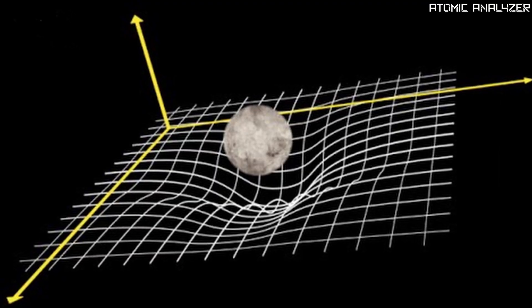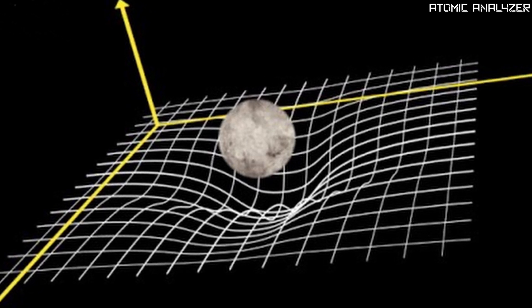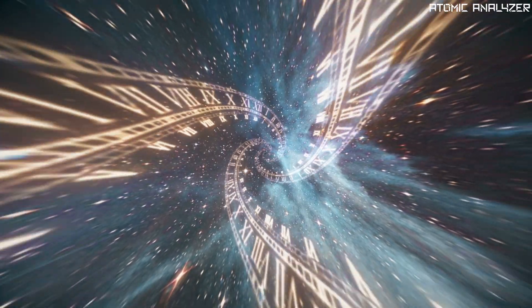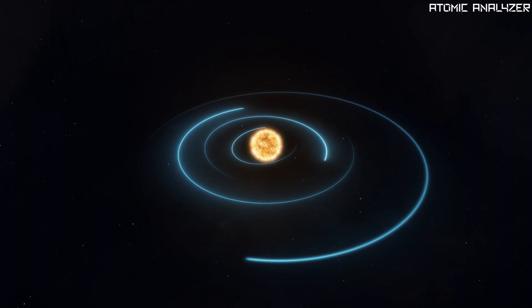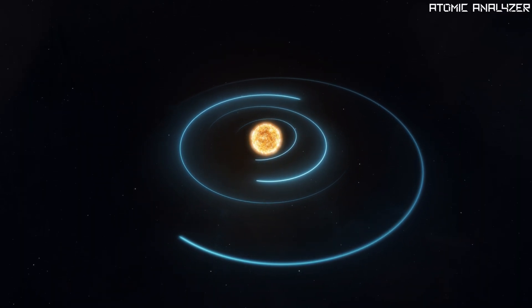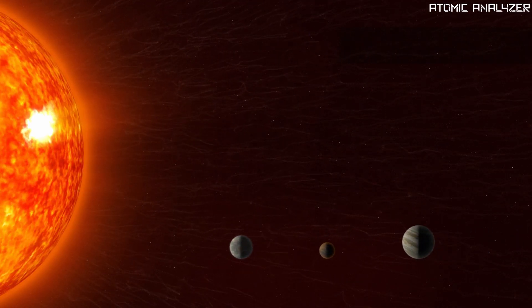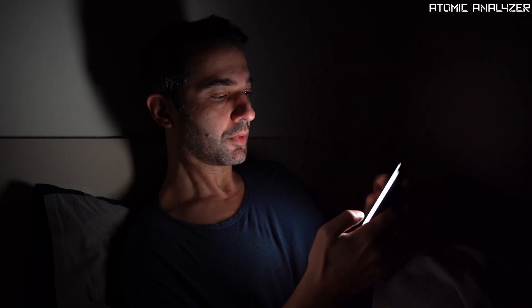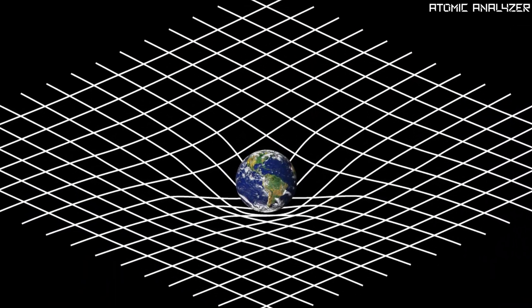Now here is the exciting part. Objects in motion follow the straightest possible paths through this curved space-time. This means that even though it looks like they are moving in a curve, they are actually moving in a straight line through curved space-time.